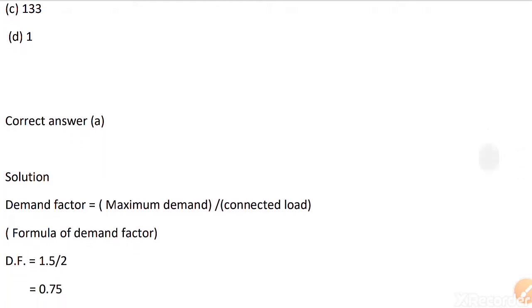So demand factor is maximum demand by connected load, 1.5 divided by 2 is equal to 0.75.